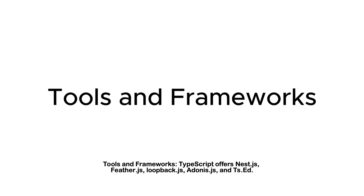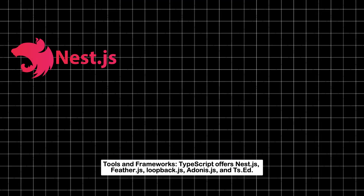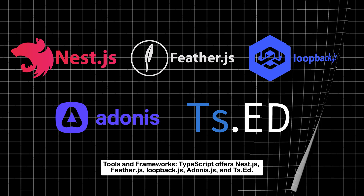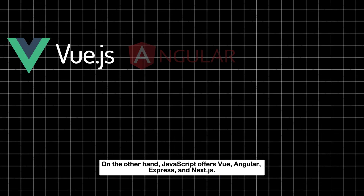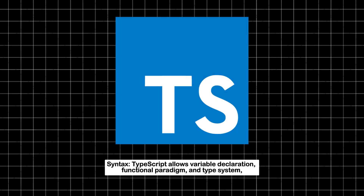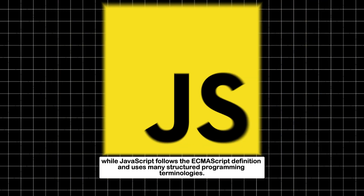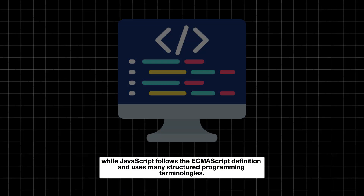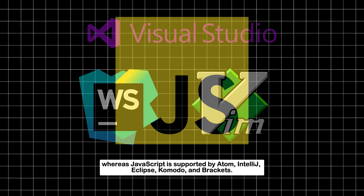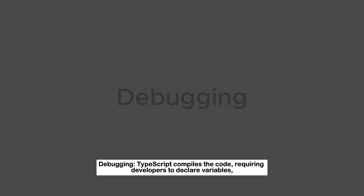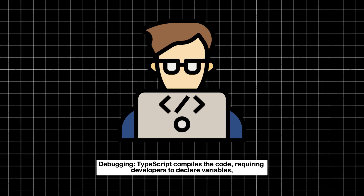Typing: TypeScript is strongly typed, whereas JavaScript is loosely typed. Complexity: TypeScript's static features increase complexity, whereas JavaScript is comparatively less complex. Tools and frameworks: TypeScript offers Nest.js, Feather.js, Loopback.js, Adonis.js, and ts.ed; JavaScript offers Vue, Angular, Express, and Next.js. Syntax: TypeScript allows variable declaration, functional paradigm, and a type system, while JavaScript follows the ECMAScript definition and uses many structured programming terminologies. IDE support: TypeScript is supported by Visual Studio Code, WebStorm, and Vim, whereas JavaScript is supported by Atom, IntelliJ, Eclipse, Komodo, and Brackets.